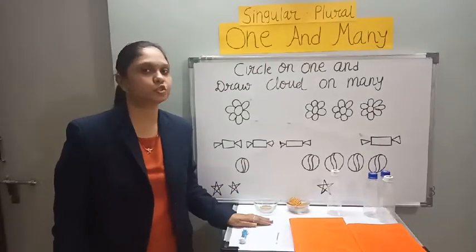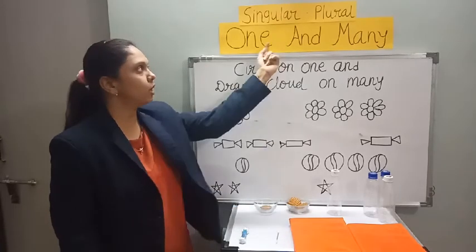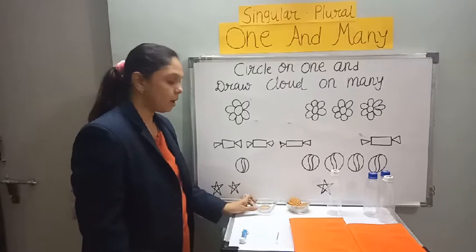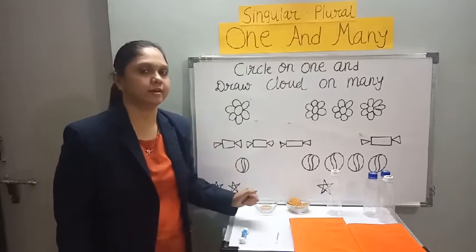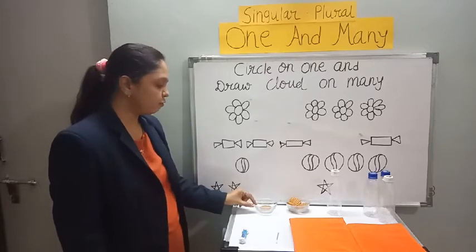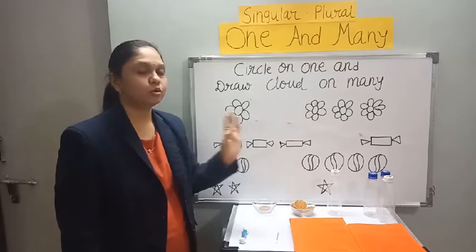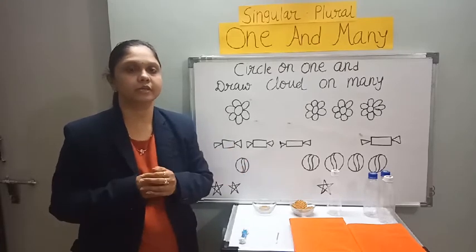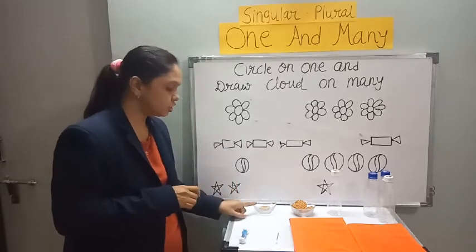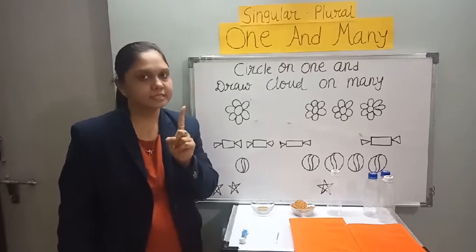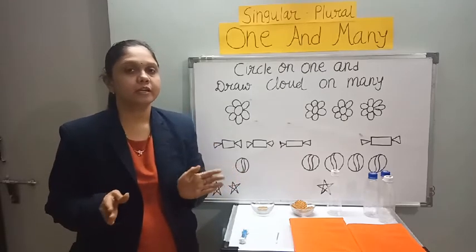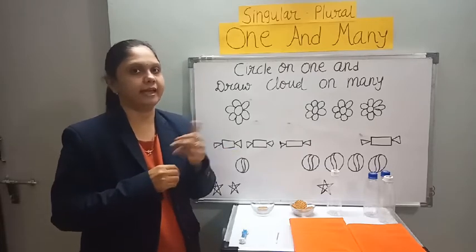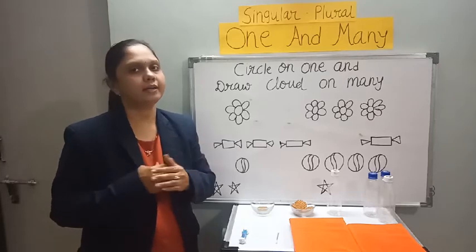Okay, so kids today we will learn our new concept — One and Many. When we speak about one thing, it's called singular. And when we speak about more than one, it's called many, or plural. So one is singular, and many is plural. Both are the same concept.